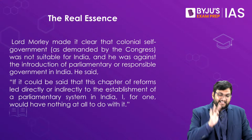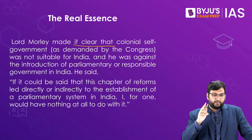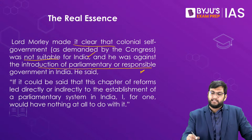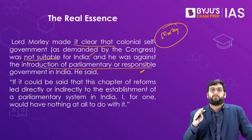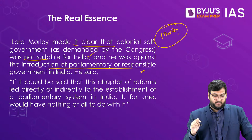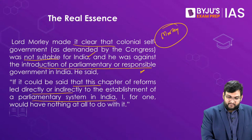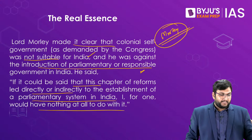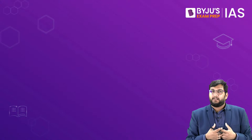The real essence of the Morley-Minto reforms is captured by Morley's own words: he made it clear that colonial self-government as demanded by the Congress was not suitable for India, and he was against the introduction of parliamentary and responsible government in India. This is the key difference between Montague-Chelmsford reforms and Morley-Minto reforms — by the time of Montague-Chelmsford, the concept of Swaraj was accepted, whereas here Swaraj was totally denied. Morley was just trying to meet the demands of the moderates and the Shimla Deputation while setting a very dangerous precedent in the electoral process.